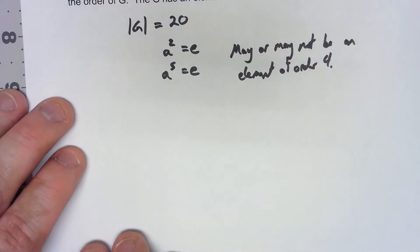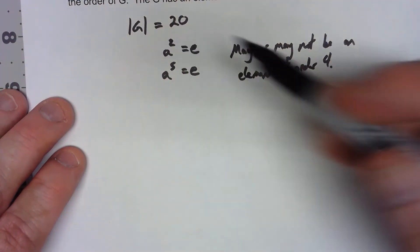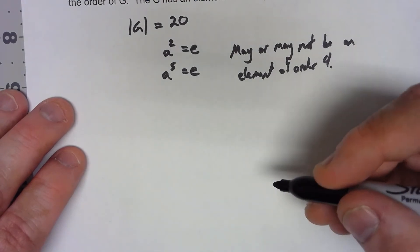Any prime that divides the order, we know we've got an element of that order. But non-primes that divide the order, we may or may not.